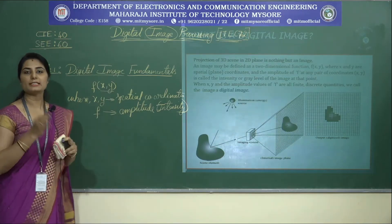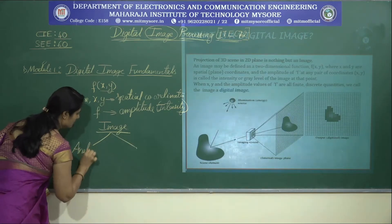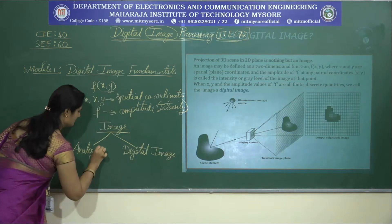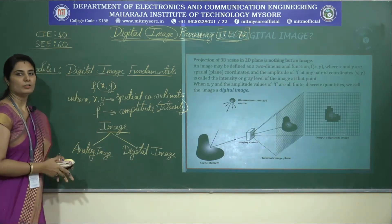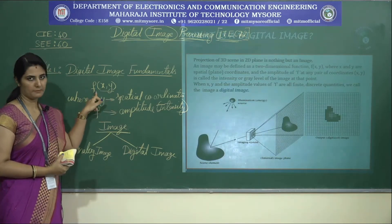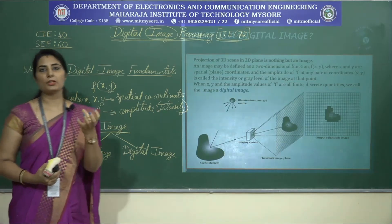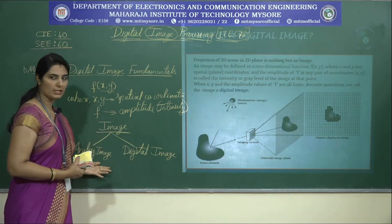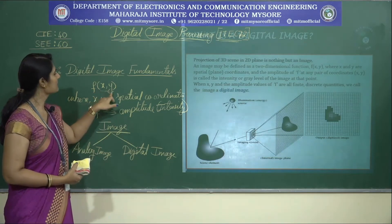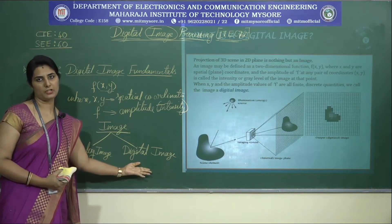Images can be classified into two types: analog image and digital image. If the values of x, y and f have a continuous range of values, we call such an image an analog image. A good example is the reproduction on CRT monitors. When the values of x, y and the amplitude f are all finite and discrete quantities, we call such an image a digital image.